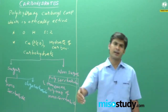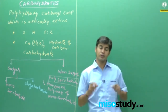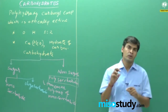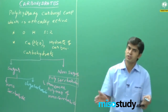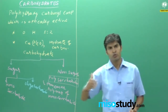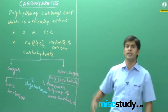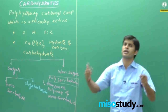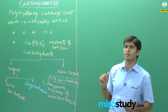Disaccharide is a 2-unit monosaccharide combination. Trisaccharide is a 3-unit monosaccharide combination. Tetrasaccharide is a 4-unit combination, and a large number of monosaccharide units combined together becomes a polysaccharide.